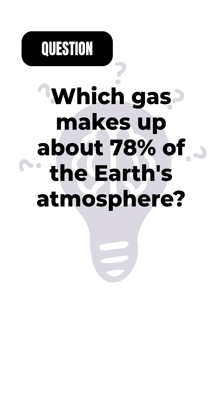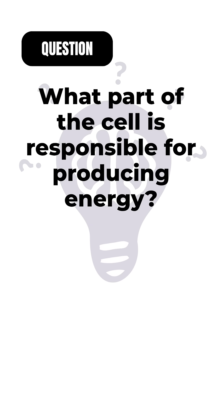Which gas makes up about 78% of the Earth's atmosphere? Nitrogen. Nitrogen is the most abundant gas in the atmosphere, making up about 78%.